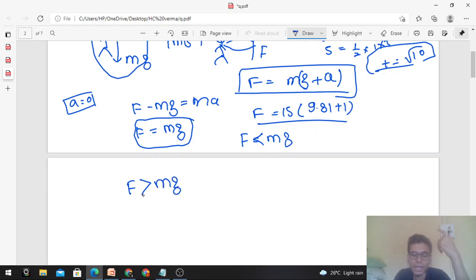If the monkey is accelerating downward, the force it applies on the rope will be less than mg. So you can see the different scenarios.